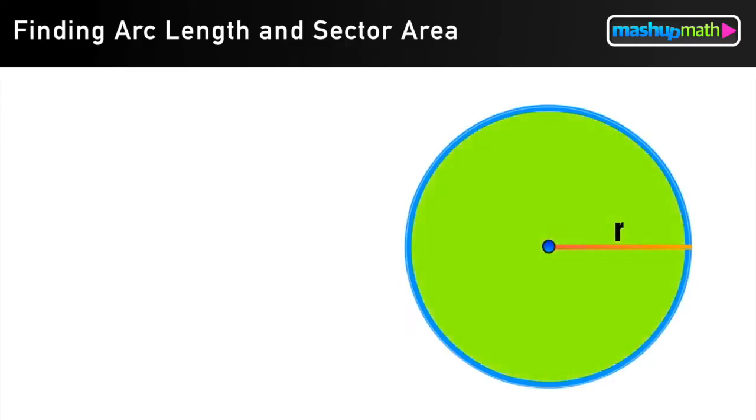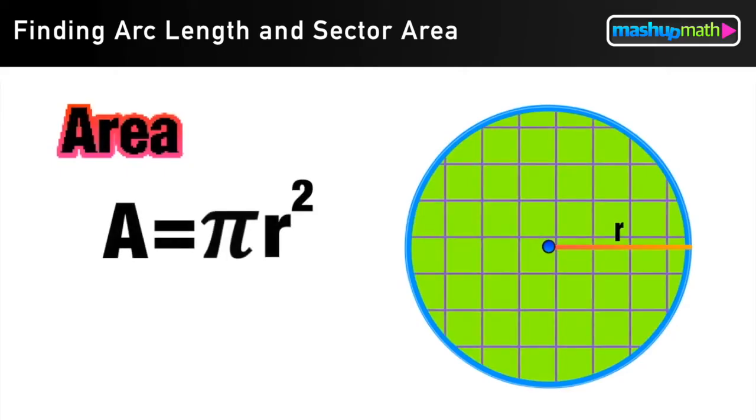We also know that the space contained within the circle is called its area. For any circle, area is equal to pi times the radius squared since we measure area in square units.